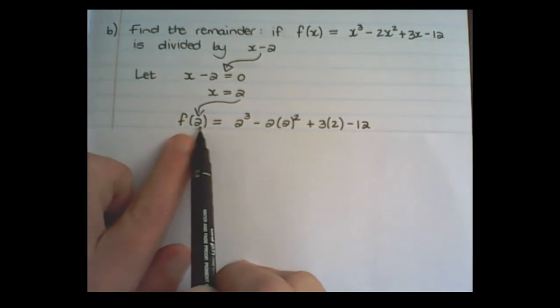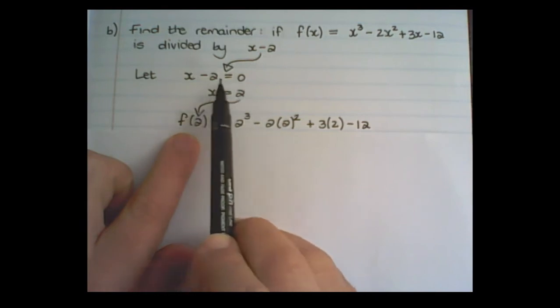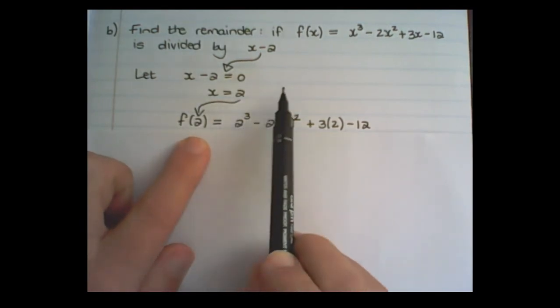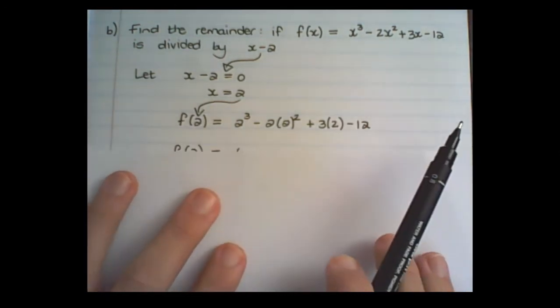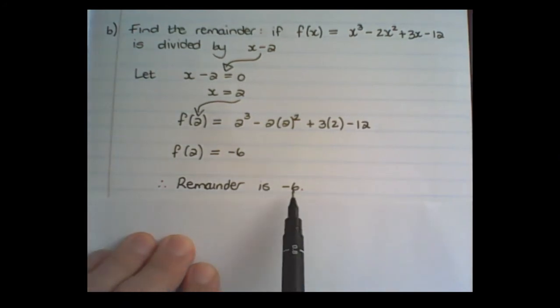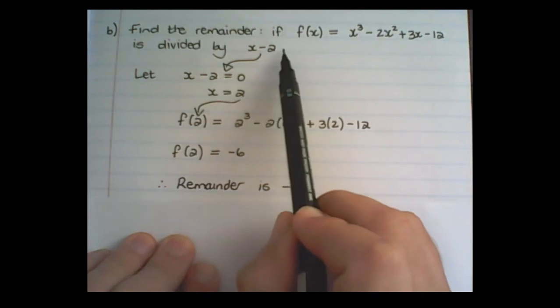Notice I'm not substituting with negative 2, but with positive 2, because I set this equal to 0. So in the place of x, I have now positive 2 and I simplify. Therefore, the remainder is negative 6 when I divide this expression by x minus 2.